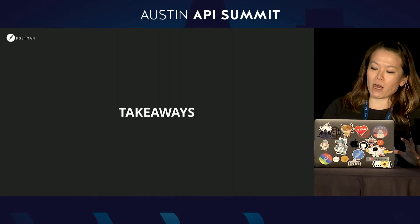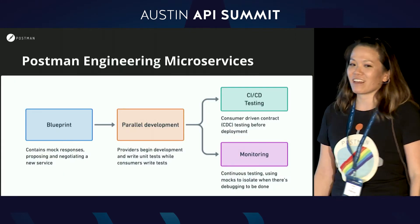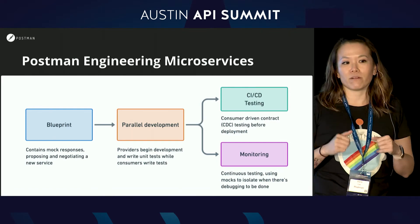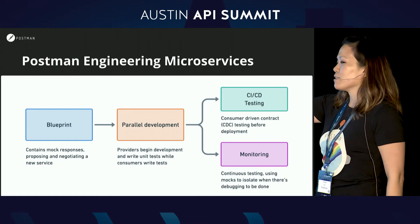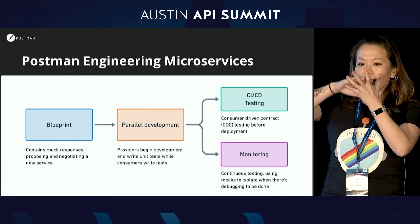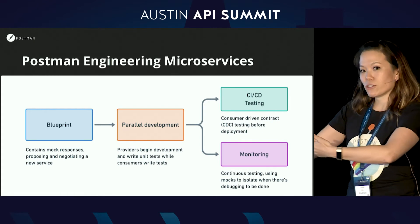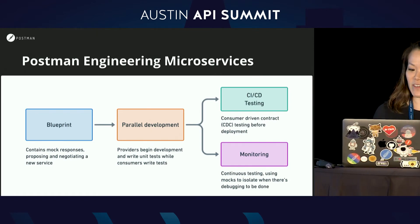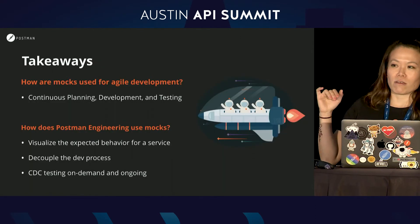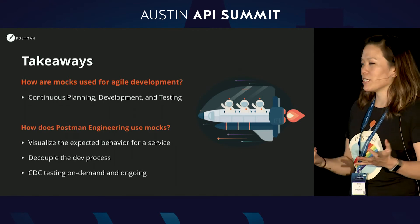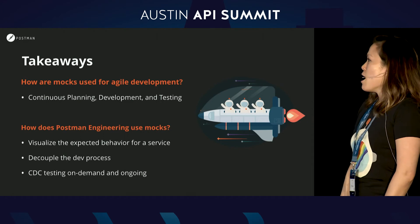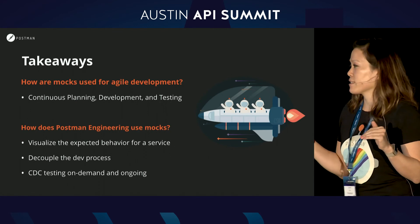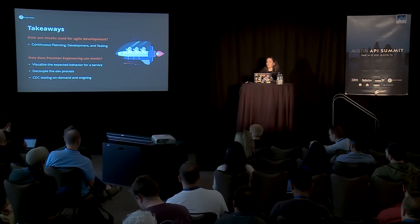So to recap how Postman Engineering uses mocks: we actually do dog-food our own process. We use Postman at every step of our development process, and if something's a little painful, we feed that back into how we improve the product. We start with a blueprint in a brand new workspace, articulate our request examples, and that informs our mock servers used as specifications. Postman doesn't consider itself an agile shop, but we do practice continuous iteration — specifically in the planning, development, and testing phases. We use mocks in the earliest stages as blueprints to visualize the intended service, to decouple development and testing, and for CDC testing and ongoing testing.